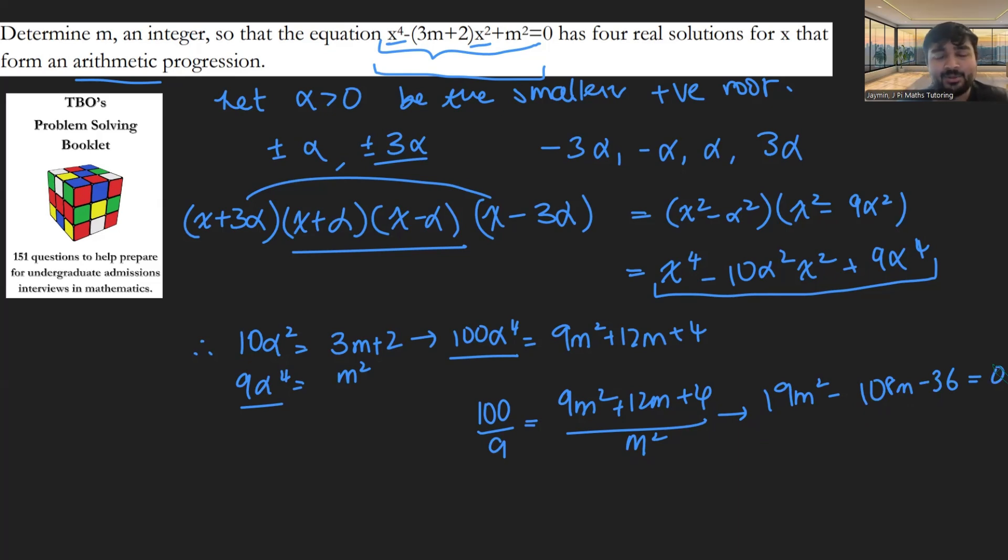This is not a particularly pleasant quadratic. You can solve it, though. You get two solutions for m: m = 6 and m = -6/19. And of course, we're looking for m to be an integer. So m = 6 will be our answer.